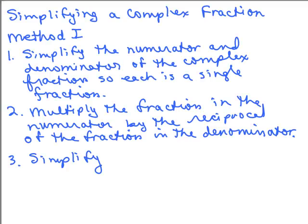There are a couple of methods for simplifying a complex fraction. I'm going to start with Method 1. You simplify the numerator and the denominator of the complex fraction so each is a single fraction, then multiply the fraction in the numerator by the reciprocal of the fraction in the denominator. That's because it's a basic division problem — when you divide fractions you multiply by the reciprocal. And lastly, we simplify.